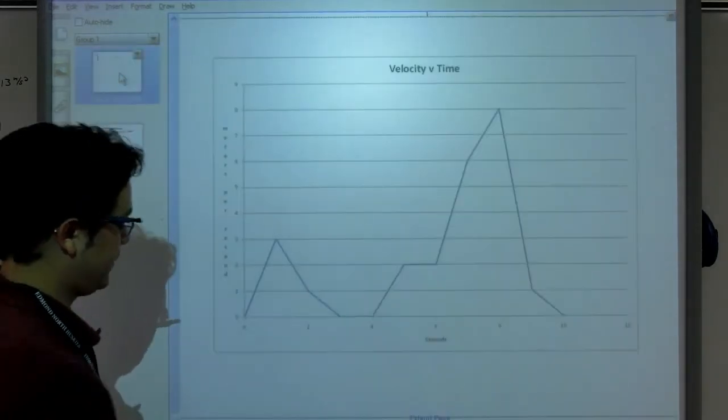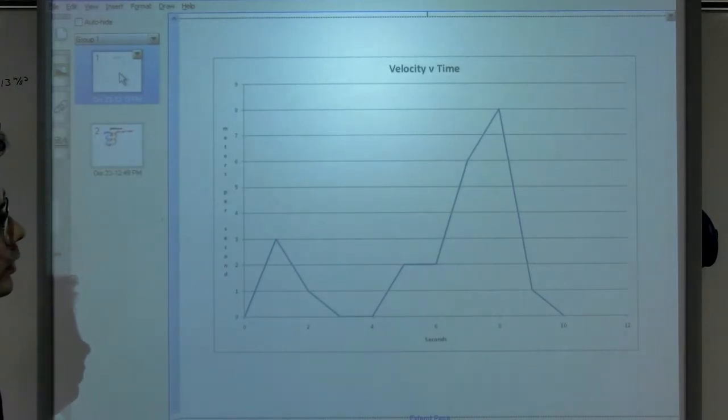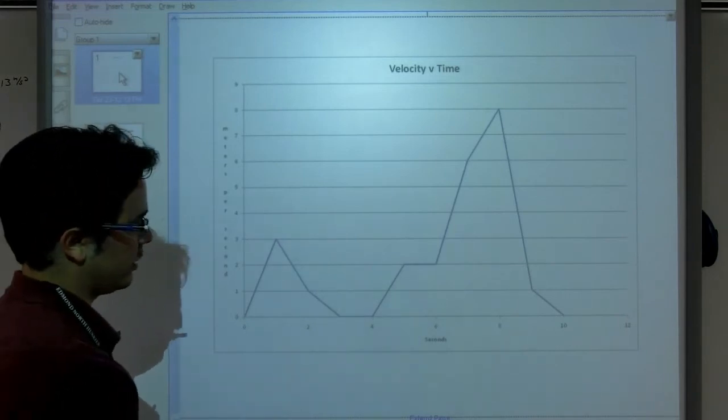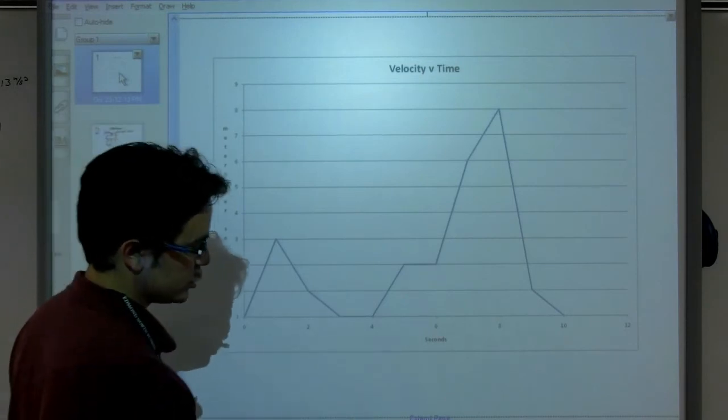Okay, so let's start off, we're on a velocity versus time graph. We can tell two bits of information. We can find our acceleration in a given period, or we can find the displacement over a given period. So let's start off with the acceleration.